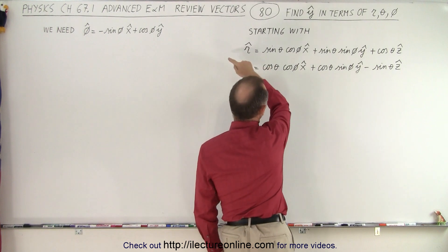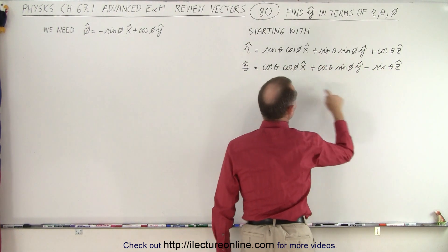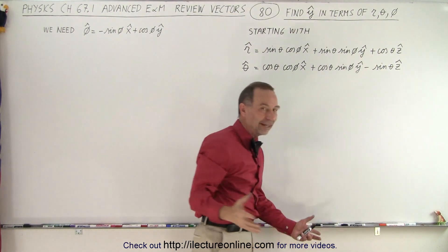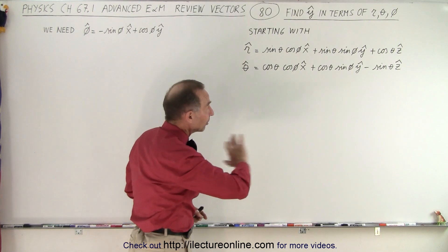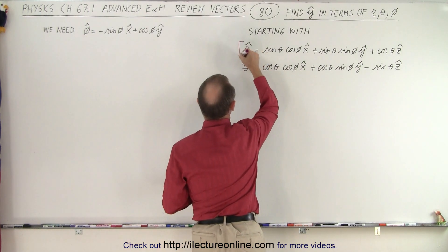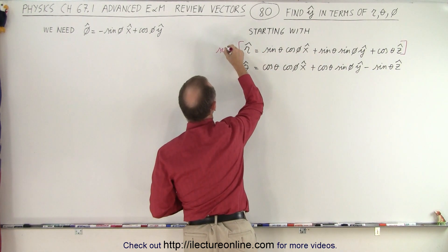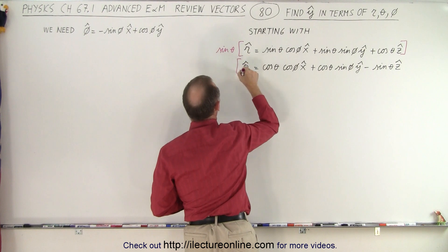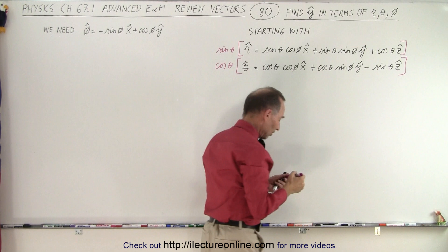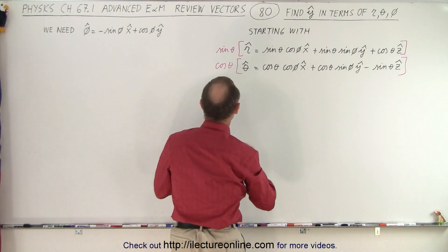The way we can do that is we're going to multiply the first equation by the sine of theta, and the second equation by the cosine of theta, so that they look exactly the same except the signs will be opposite. Then we add the two equations together, and the z-unit vector will be gone. We have to do the same to both sides of the equation to eliminate the z-unit vector.